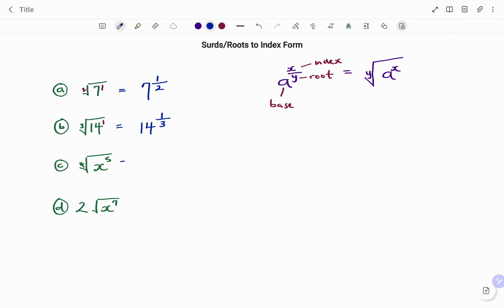In the next example, I have the fourth root of x to the power of five. So I'm starting with my base, which is x. X is raised to the power of five, and the root which will now be my denominator is four.